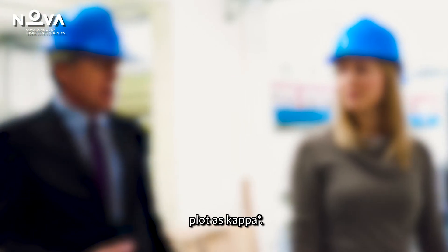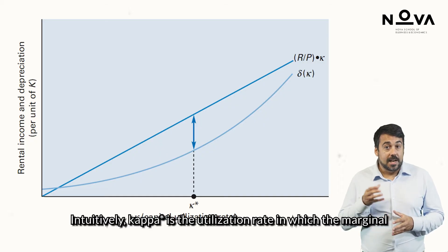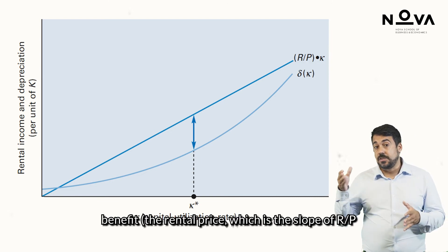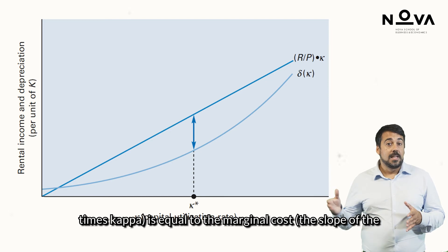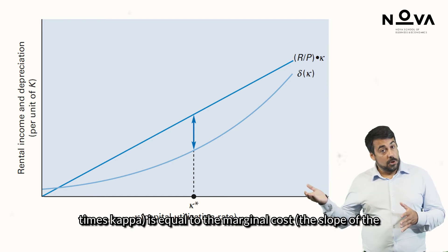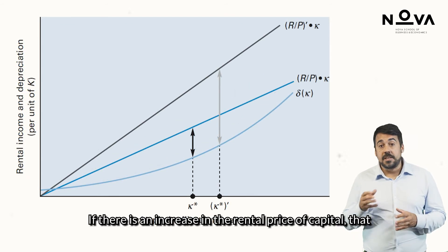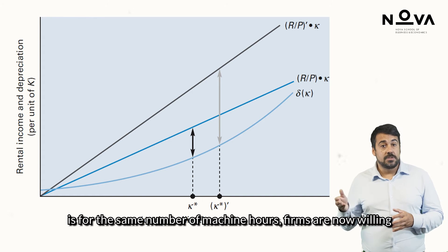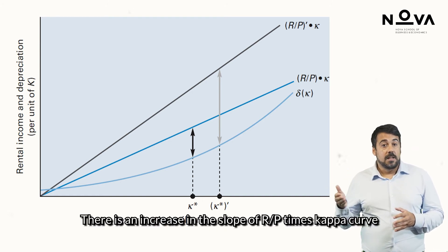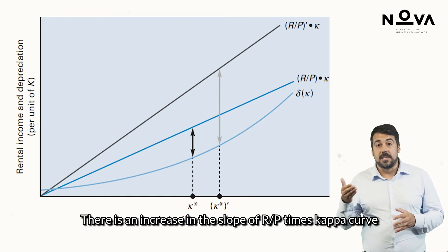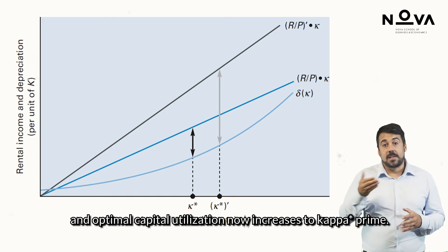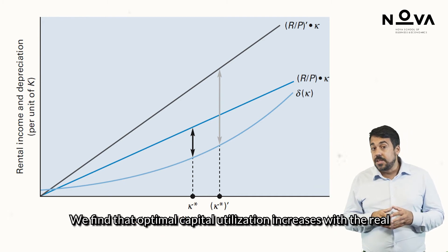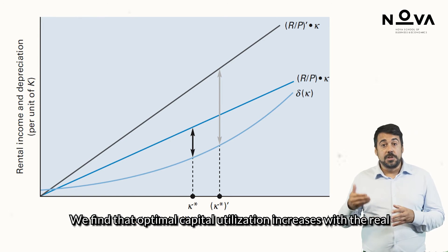Owners of capital choose Kappa to maximize this vertical distance, represented in the plot as Kappa star. Intuitively, Kappa star is the utilization rate at which the marginal benefit — the rental price, which is the slope of R over P times Kappa — is equal to the marginal cost, the slope of the Delta(Kappa) function. If there is an increase in the rental price of capital, that is, for the same number of machine hours firms are now willing to pay more, there is an increase in the slope of the R over P times Kappa curve, and optimal capital utilization now increases to Kappa star prime. We find that optimal capital utilization increases with the real rental price of capital.